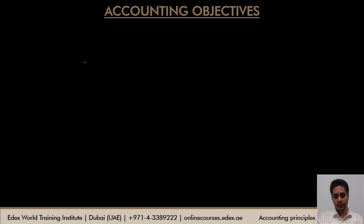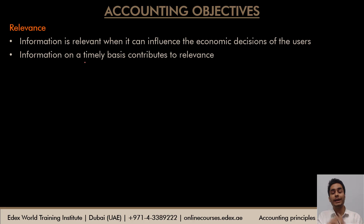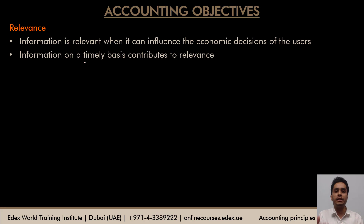Now let's have a look at the accounting objectives that have to be kept in mind. The first one is relevance. Information or financial statements are relevant when they can influence the economic decision of the users — meaning when it can impact or change their decision. The policies chosen and the way financial statements are prepared have to be relevant and important for the users. There is another aspect to relevance: the information should be available on a timely basis. Delayed availability of information will not be relevant, and the user will not be able to make any concrete decision based on the information provided.